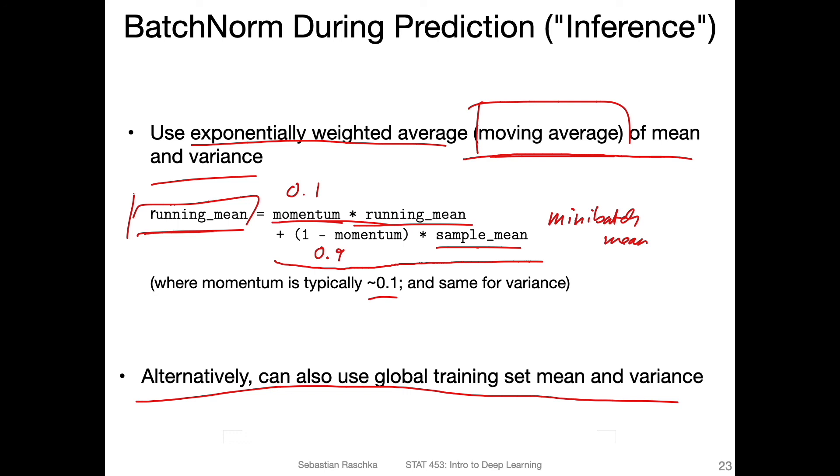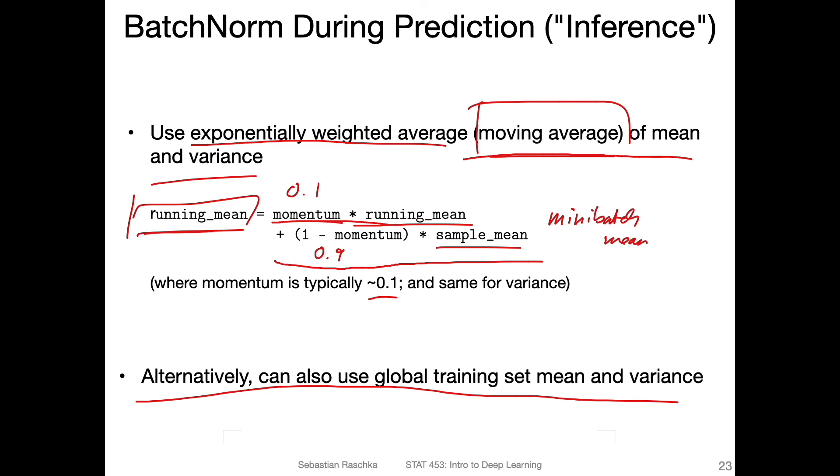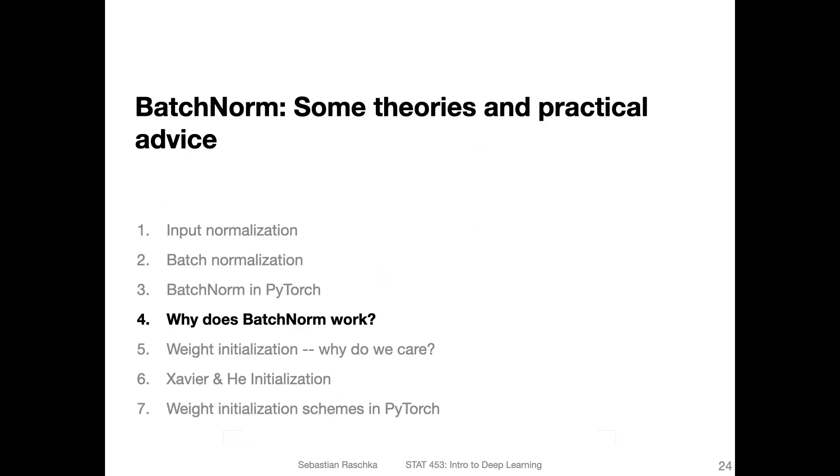During inference you use that one to scale the data point that you do a prediction on. You yourself don't have to do that. By using model.eval, it will actually happen automatically. But here's just the explanation of what's going to happen under the hood. That is how batch norm works in PyTorch. In the next video I want to briefly go over some types of literature that tried to explain how batch norm works.